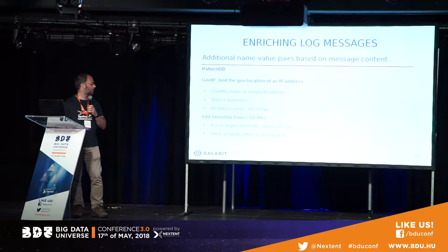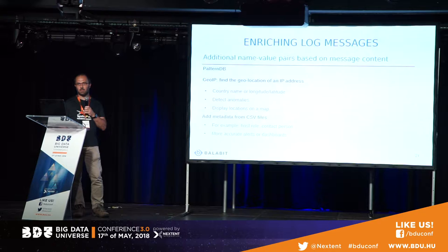You can also enrich log messages and add additional name-value pairs based on message content. Using GeoIP, you can add geolocation to your IP addresses, which is quite interesting if you want to detect anomalies or display locations on a map. And you can use CSV files to add metadata to log messages — like a host role, contact person, or any other information — which allows you to create much more accurate alerts or dashboards later on.